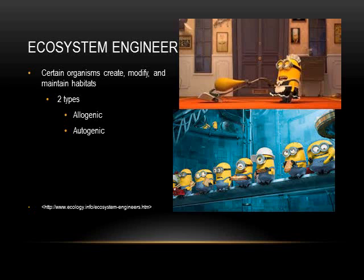Species that are ecosystem engineers are extremely important. They drastically influence their habitats, almost single-handedly altering their surroundings. There are two kinds: allogenic, which physically alter the material around them, and autogenic, which change the environment through their own physical structure.